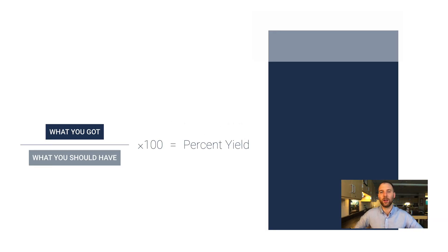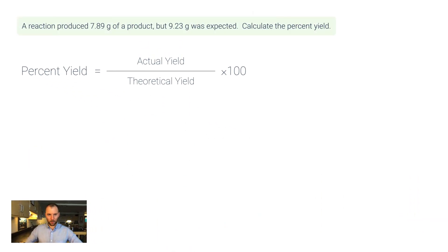That gives you your percent yield. So let's do a couple example problems. Let's start with one that's a little easier. This one says a reaction produced 7.89 grams of a product but 9.23 grams was expected.